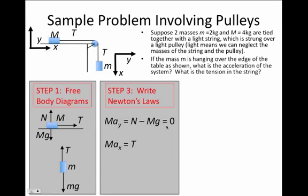The mass capital M also has a force in the x direction along the table or along the string, and so we can write mass times acceleration in the x direction is equal to T. That's because if I look at this free-body diagram, the only force acting in the x direction from capital M is T.